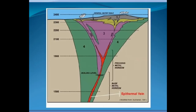Here's another diagram showing where the epithermal vein actually forms — along a fault zone with a heat source down below. These numbers are in meters, not feet. The precious metal-rich horizon is about 500 meters, roughly 1,500 feet, below the surface — though that's a very approximate number. Sometimes precious metal mineralization is only 100 feet or less below the surface, and in other cases it might be several thousand feet below the surface.